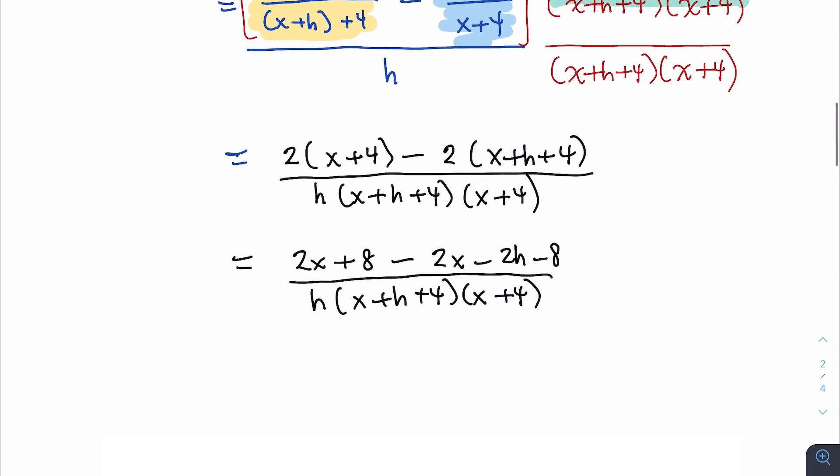And you notice that several like terms cross out. We have 2x minus 2x that fizzles out, and we have plus 8 minus 8 that fizzles out. So this is equal to negative 2h all over h times (x+h+4), (x+4).